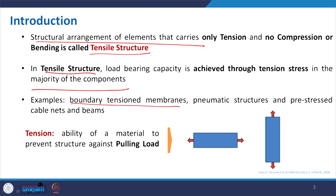Examples of tensile structures include boundary tension membranes, tensile fabric structures, pneumatic structures which we discussed earlier, pre-stressed cable nets or beam. The cable net structure is normally used for making roofs for stadiums where a membrane is used to make the structure light, supported with cable nets and cable beams.